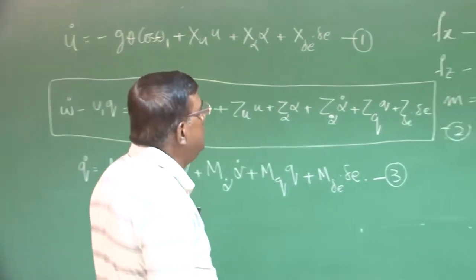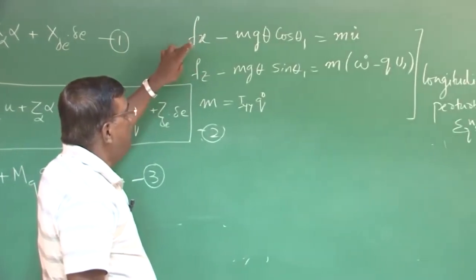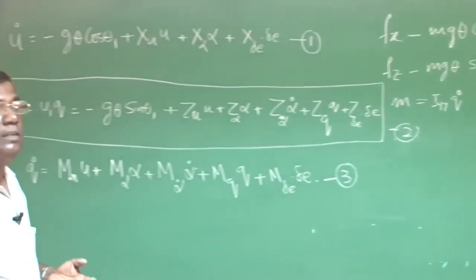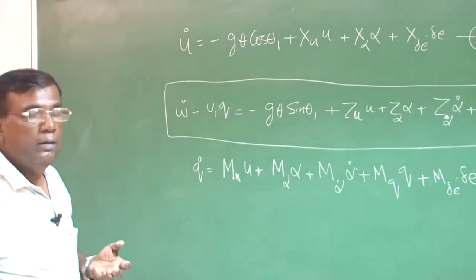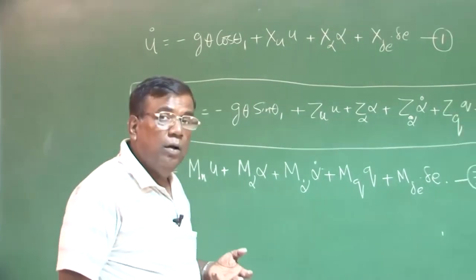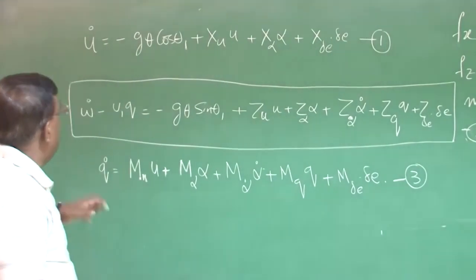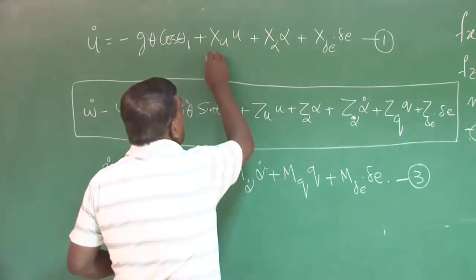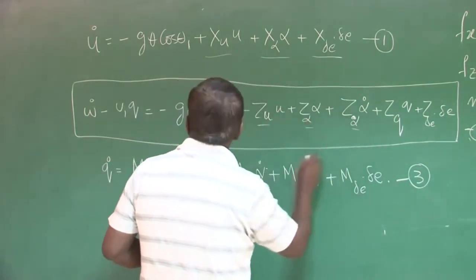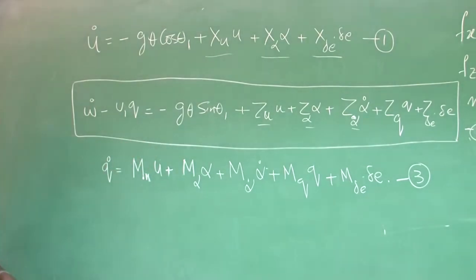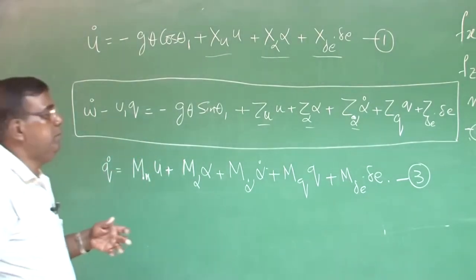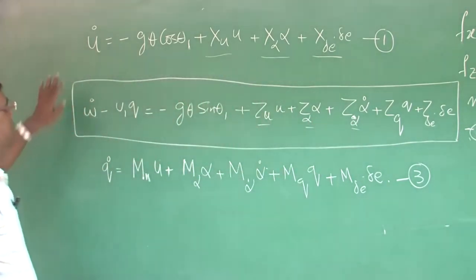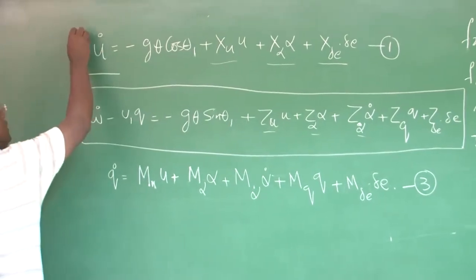To solve these equations, we needed to have the functional form of fx, fz, and m — that is, how fx, fz, and m depend on motion variables and control variables. We have seen that once I know the values of x_u, x_alpha, x_delta_e, and all these dimensional derivatives, I can explicitly write fx, fz, and m as functions of motion variables and control variables. Then my equation is complete and in a form where I can solve it.